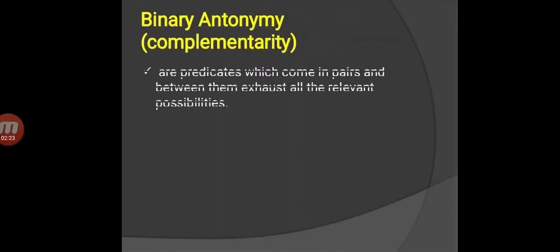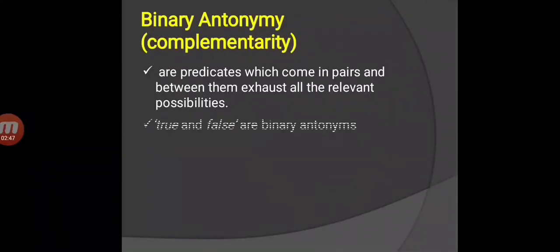The first is binary antonyms or complementarity. They are predicates which come in pairs and between them exhaust all the relevant possibilities. If one predicate is applicable, then the other cannot be and vice versa. Another way to view this is to say that a predicate is a binary antonym of another predicate if it entails the negative of the other predicate. For example, true and false are binary antonyms. If a sentence is true, it cannot be false. If it is false, it cannot be true. Alternatively, if something is true, this entails that it is not false. If it is false, this entails it is not true.